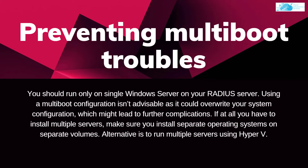The next best practice is the prevention of multi-boot troubles. You should run only one single Windows Server on your RADIUS server, as using a multi-boot configuration isn't advisable — it could overwrite your system configuration and lead to further complications. If you must install multiple servers, install separate operating systems on separate volumes. Alternatively, you can run multiple servers using Hyper-V virtualization.